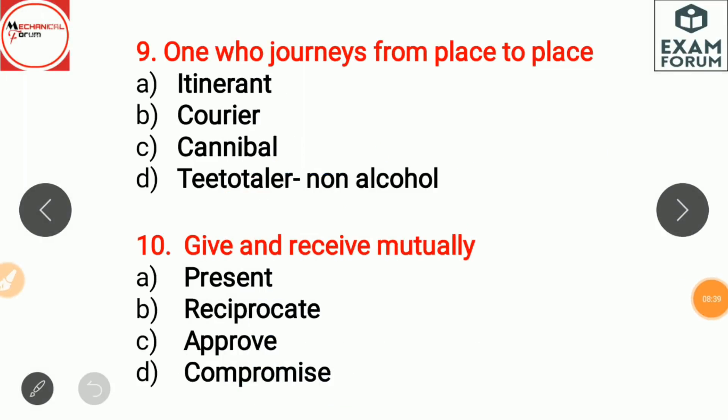One who journeys from place to place is itinerant. A courier is a person who carries letters or papers. A cannibal is one who eats the flesh of other people of the same species. A teetotaller is a non-alcoholic — a person who abstains from alcoholic drinks.